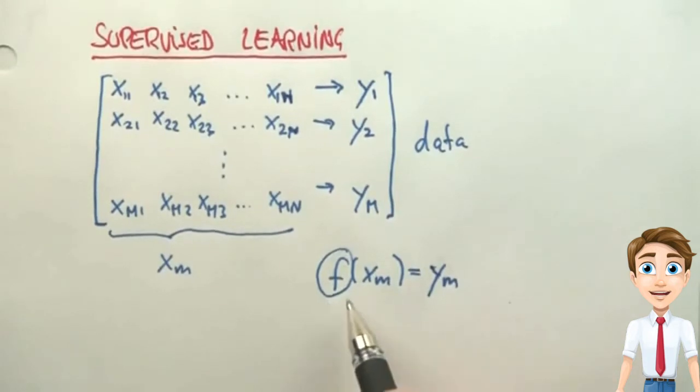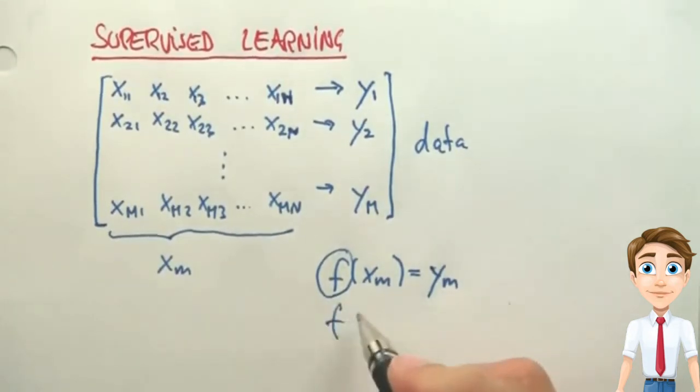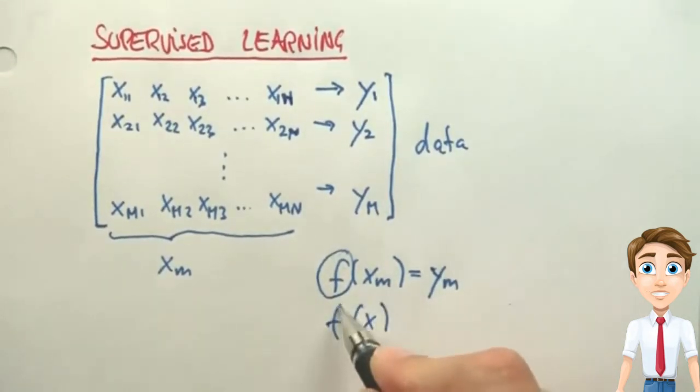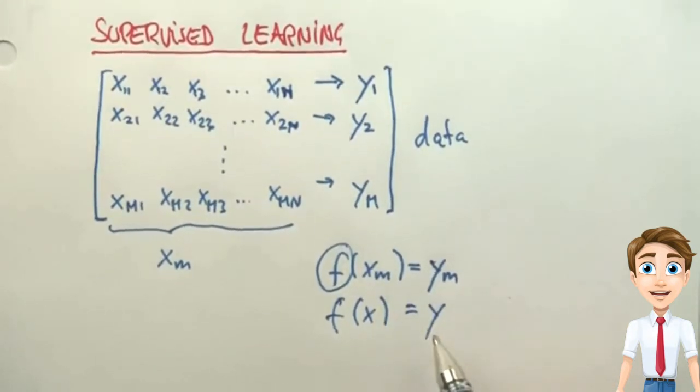And once you identify it, you can use it for future X's that weren't part of the training set to produce a prediction that hopefully is really, really good.